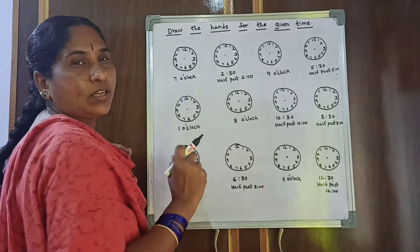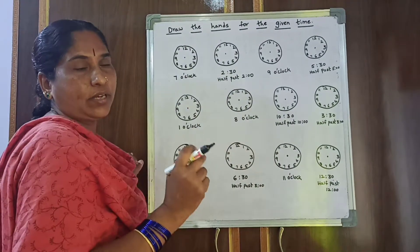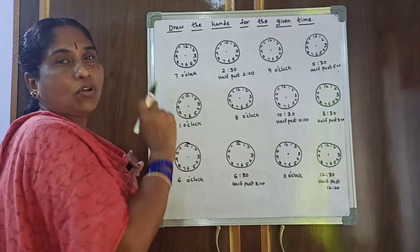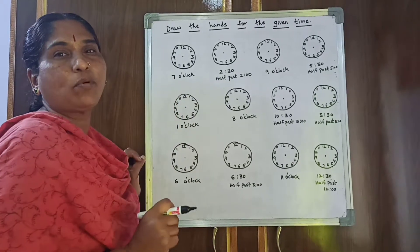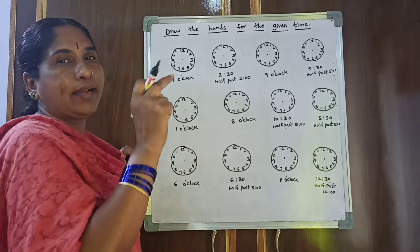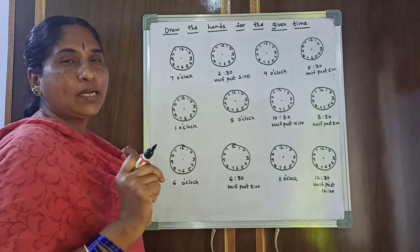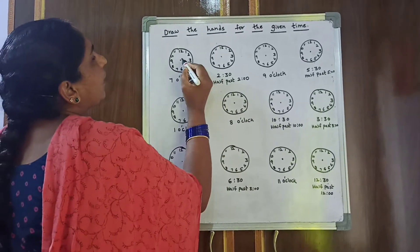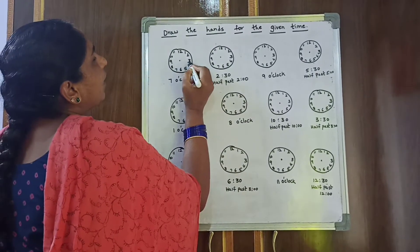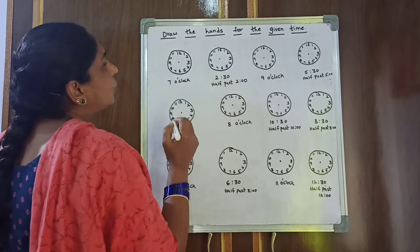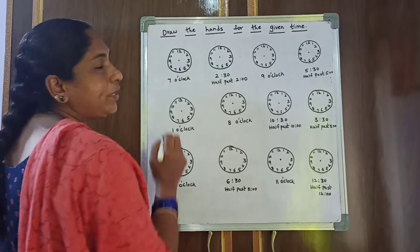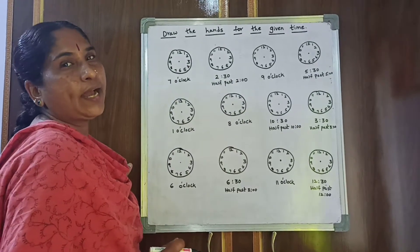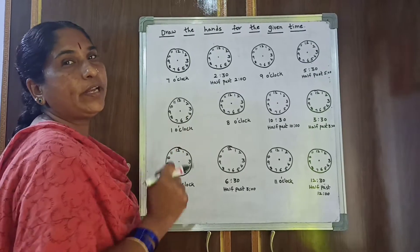Whenever you are writing in your classroom book, first draw the clock with the help of a bangle, then write the numbers. Keep a dot between 9 and 3 so that it will be the middle point. From the middle point you can draw the hands.